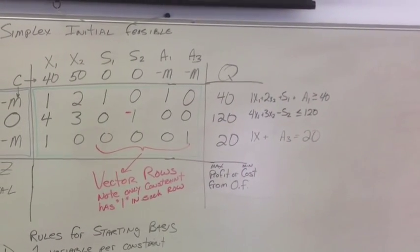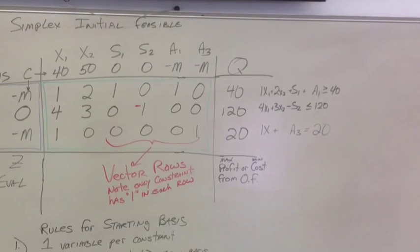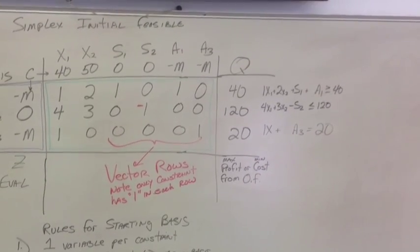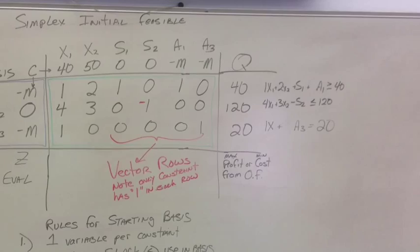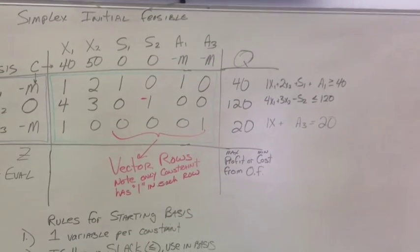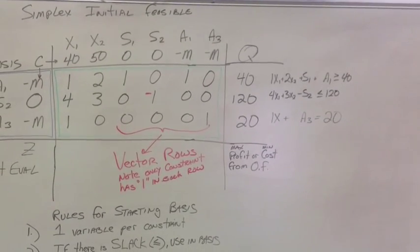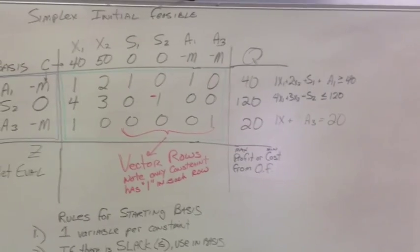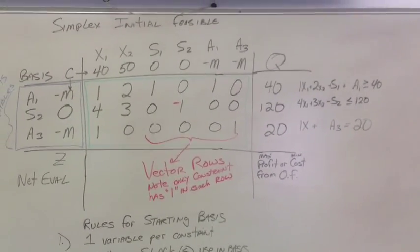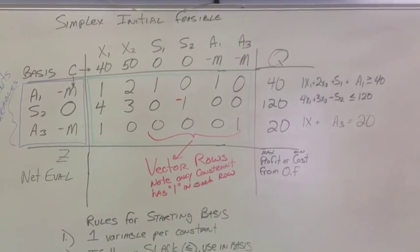Last, I finished filled in the queue. The queue is just quantity, but you can see for the initial feasible, our queue is just the right-hand side of our constraints. So for constraint 1 is 40, constraint 2 is 120, for constraint 3 it's 20. This is one of the reasons why we use start at the origin. It makes it easy to set up our initial feasible solution.